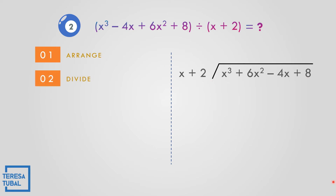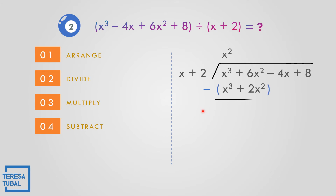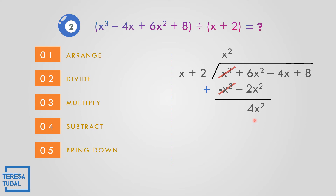Second step, divide: x cubed divided by x is x squared. Multiply: x squared times x is x cubed, and x squared times 2 is 2x squared. Subtract — change the sign of the expression in parentheses, proceed to addition: negative x cubed minus 2x squared. So 1x cubed minus 1x cubed cancels to 0, and 6 minus 2 gives positive 4x squared. Bring down negative 4x, giving 4x squared minus 4x.